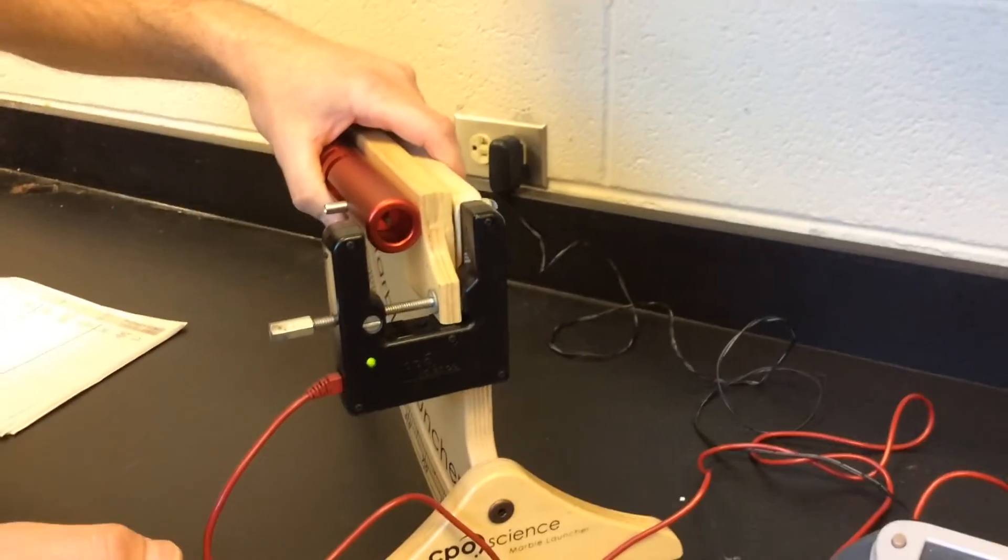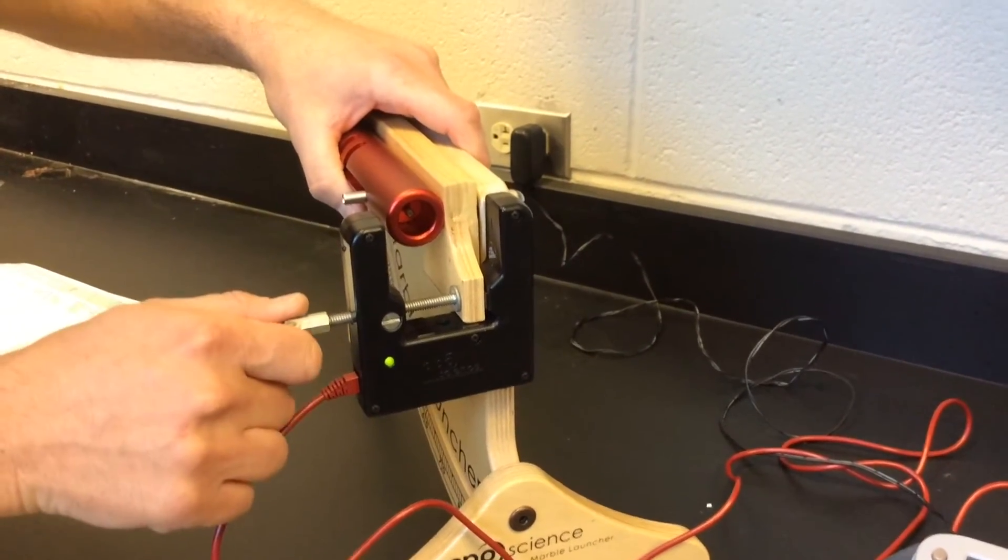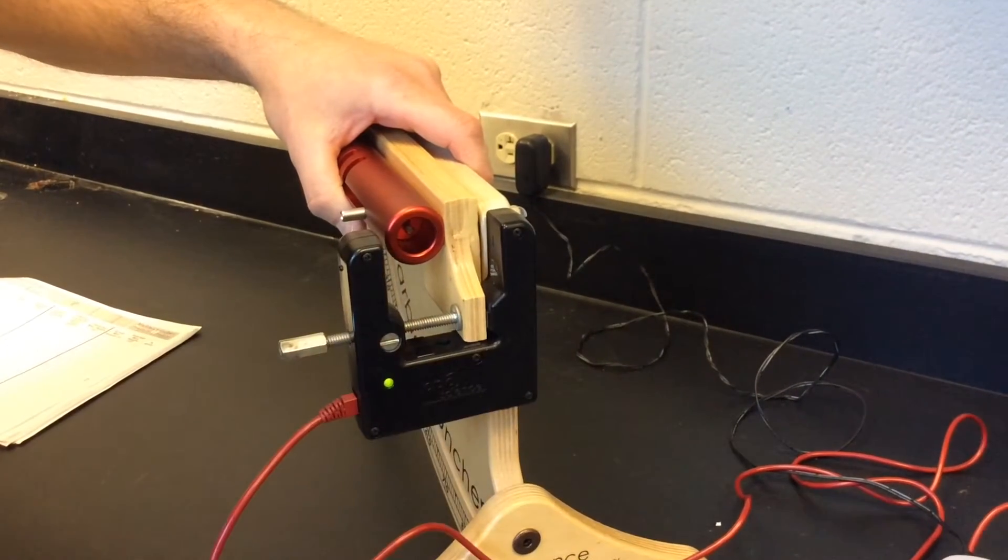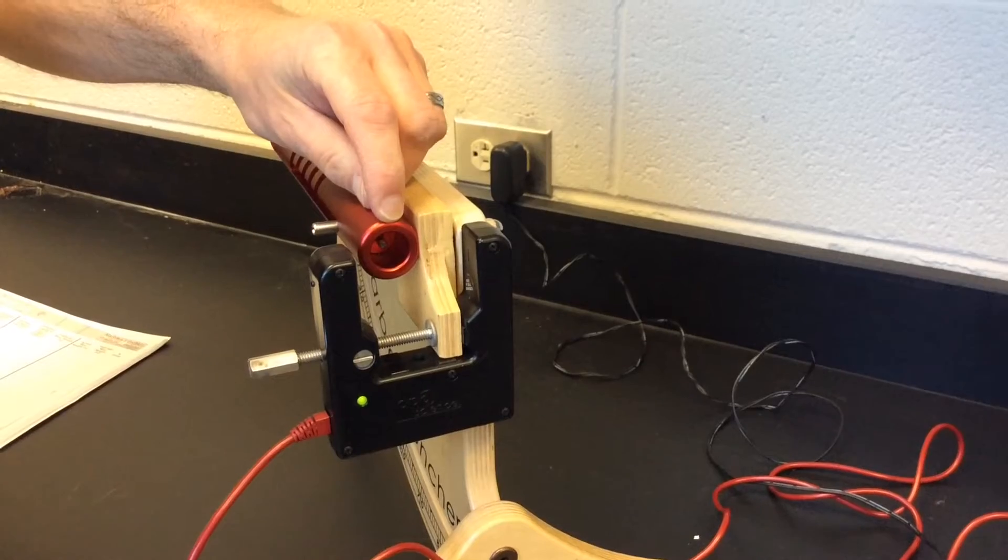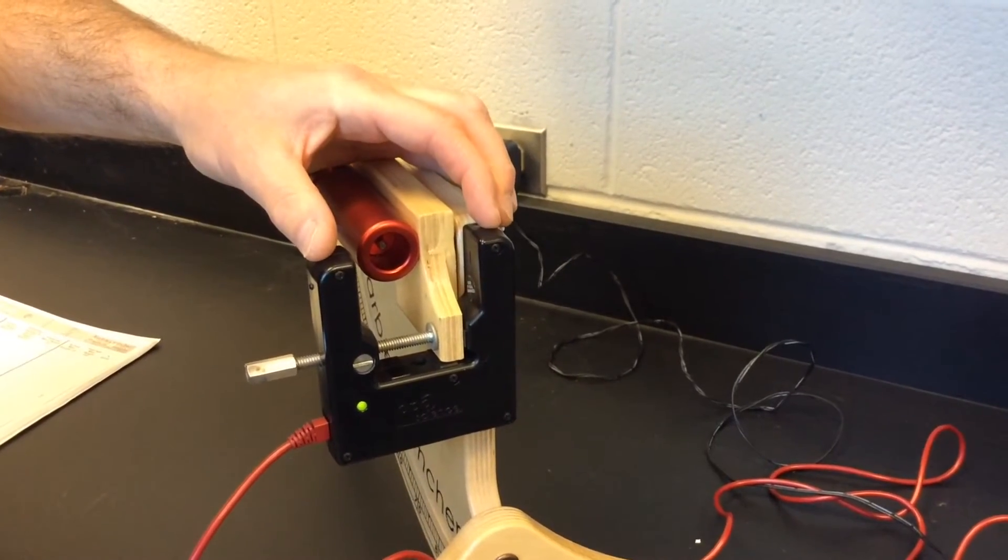Photogate screws on the front of the marble launcher, just like that. It's going to be flush against the piece of wood so that the muzzle of the marble launcher is right next to where the photogate is.